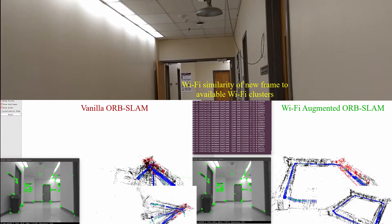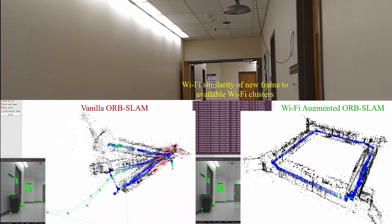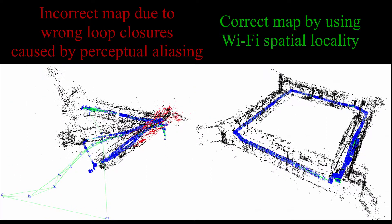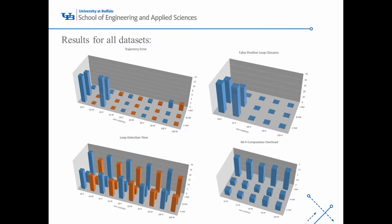Here, the final constructed maps are shown. The vanilla map is incorrect with a wrong loop closure due to perceptual aliasing, but the Wi-Fi augmented version is accurate by using Wi-Fi spatial locality.